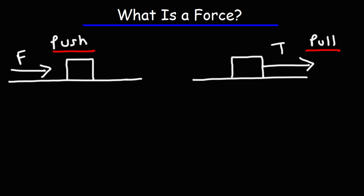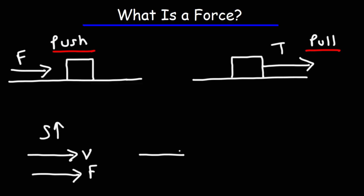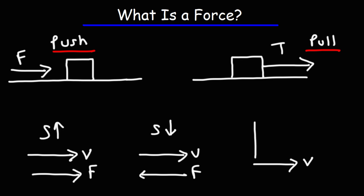If you apply a force, you can squeeze and crumple paper, so you can change the shape of paper by applying force. Forces can also transfer energy. Whenever the velocity and the force vectors are in the same direction, the object is going to speed up. When the velocity and force vectors are in opposite directions, the object slows down. When the velocity and force vectors are perpendicular to each other, the object is going to turn — in other words, it's going to change direction.